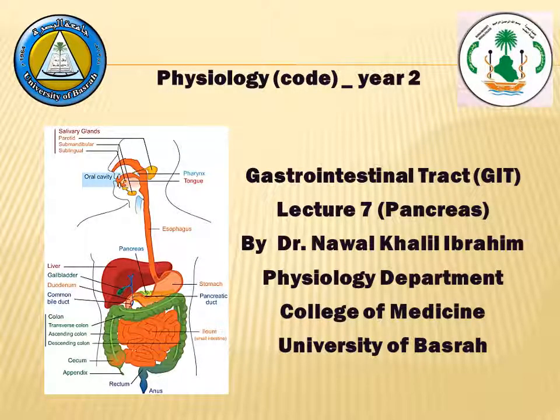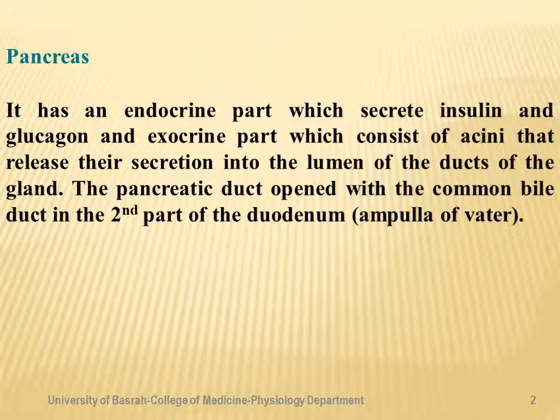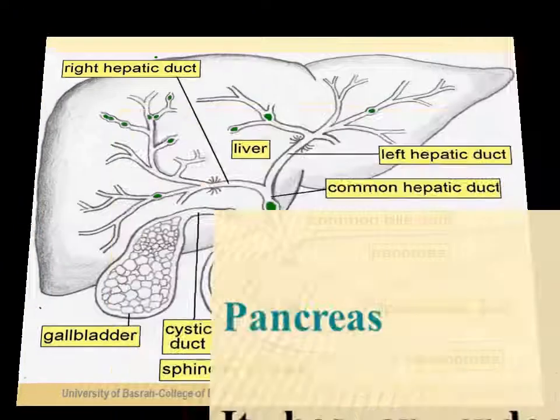Our lecture today is about the physiology of the pancreas. Our objective is to describe the role of pancreatic enzymes in the digestion and absorption of different types of food. The pancreas is a gland with an endocrine part, which creates insulin and glucagon, and an exocrine part, which consists of acini that release their secretion into the lumen of the ducts of the gland and then reach the small intestine. The pancreatic duct opens with the common bile duct in the second part of the duodenum at the ampulla of Vater.